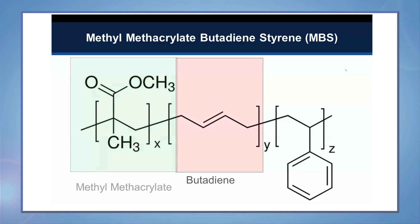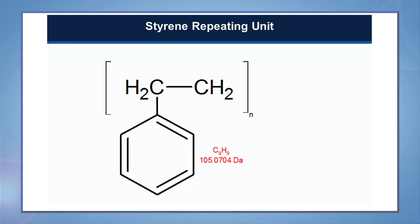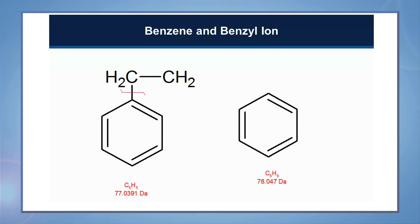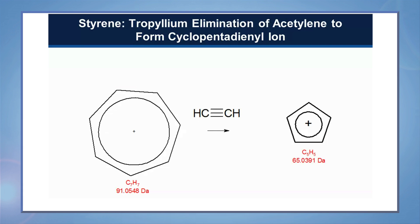For polystyrene, styrene is a relatively simple molecule and we know what the likely ionization fragments will be. The first obvious possibility is the repeating unit itself, which is m/z 105. One common mechanism is the elimination of neutral species — in this case ethylene — to yield the benzyl ion and possibly benzene. Another possibility on substituted aromatics is the formation of the very stable tropilium ion with m/z 91.